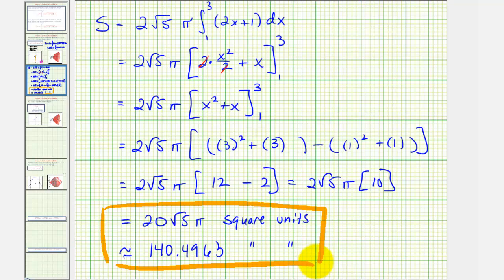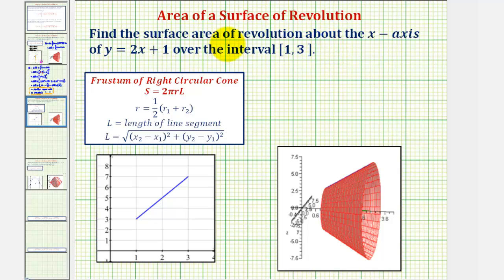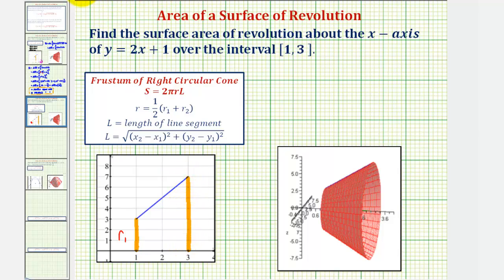Now as I mentioned earlier, because the surface is a frustum of a right circular cone, we could also find the surface area using this formula here, where s equals two pi times r times l, where r is the average radius — or one half times the quantity r sub one plus r sub two — and l would be the length of the line segment. And because it's a line segment, we can find the length using the distance formula between two points. So looking at the sketch of our line over the closed interval from one to three, this length here would be r sub one, and this length here would be r sub two. And notice how this point is the point one comma three, and this point is the point three comma seven. So we'll begin by finding r and then l, and then use our formula to find the surface area.